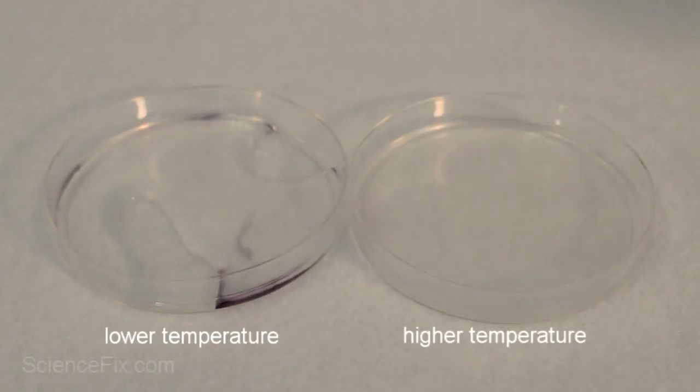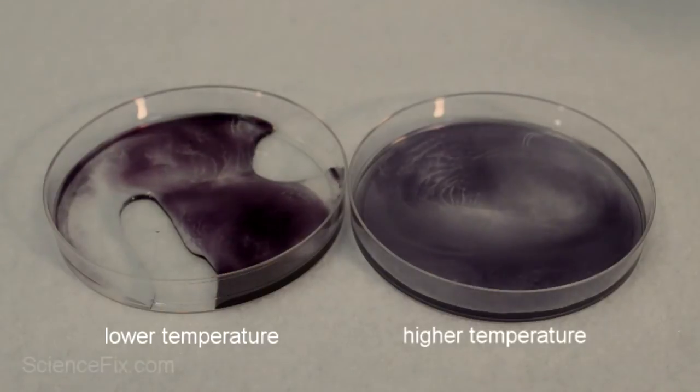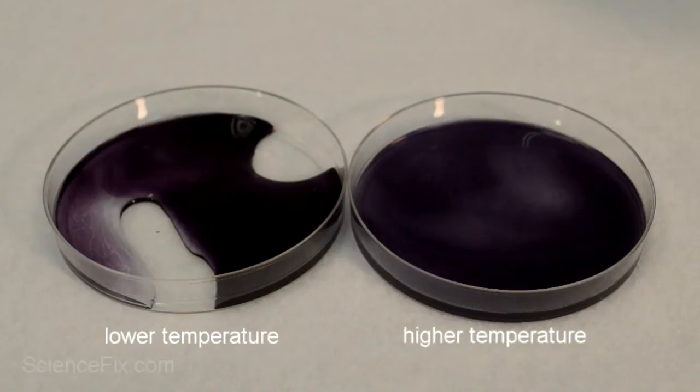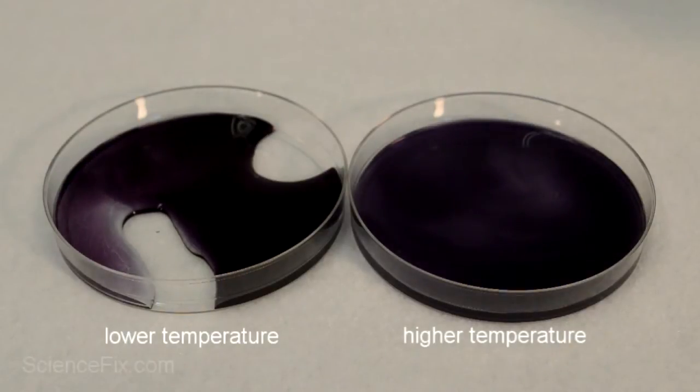Even though the reactants were put in the petri dish on the left first, it took a longer time for those reactants to do their reactions than the petri dish on the right, which was at a higher temperature.